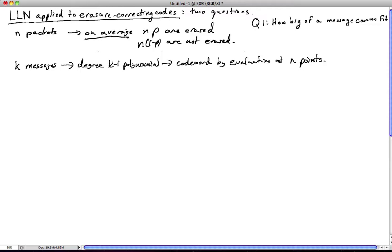What we want to know is, well, there's going to be some fluctuation around that average. So, to think about it, here's the number of non-erased packets. The histogram is going to look something like this, where the mean is going to be at n times 1 minus p. So this is the number of non-erased packets.